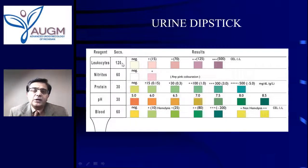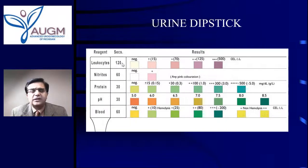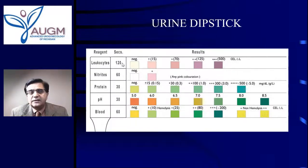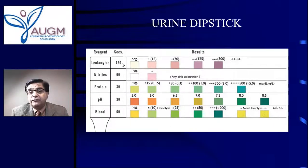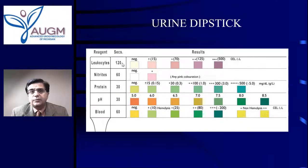When a patient comes with classic symptoms — urgency, frequency, discomfort — and she says 'I think I have a bladder infection,' there is no reason to always do this analysis, especially if it's infrequent. If her last infection was a couple of years ago, we could just treat her on the phone by calling in a basic antibiotic and seeing how she does. If her symptoms don't improve, then she needs further assessment.